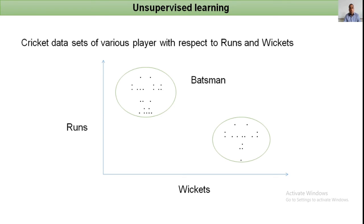From this, we can identify: if runs scored are more and wickets are less, that is a set of batsmen. If wickets are more and runs scored are less, that is a set of bowlers. If a new player's data comes in and falls in the first cluster — less wickets and more runs — we can say that player is a batsman. If it falls in the bowler's area, that player is a bowler. This is how unlabeled data is labeled into two clusters.